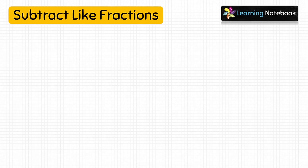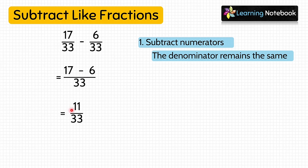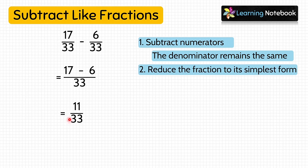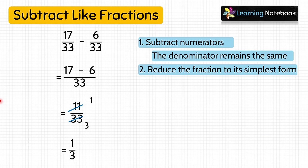Now let's subtract like fractions. We just subtract the numerators since like fractions have the same denominator. So we do 17 minus 6 upon 33: 17 − 6 = 11, giving 11 by 33. This is not in simplest form, so we reduce it by dividing by common factor 11, and we get 1 by 3.